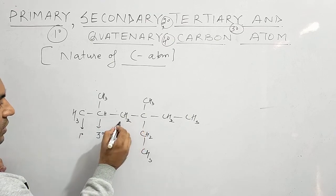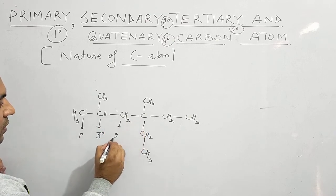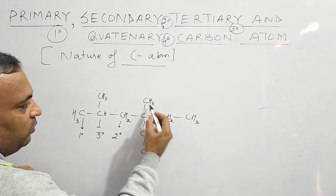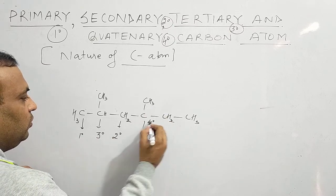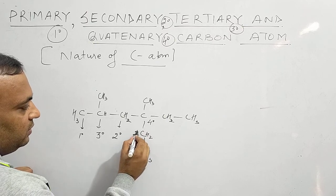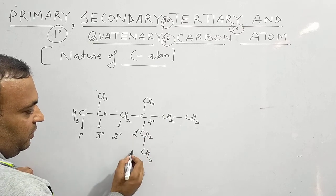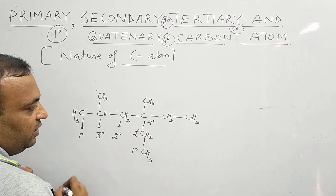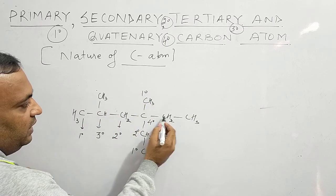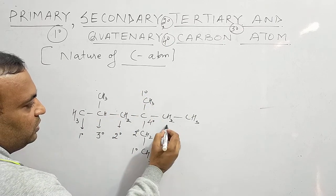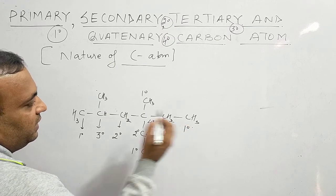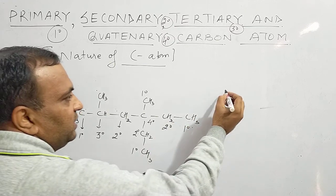This carbon atom is attached to two — it is secondary. This carbon atom is attached to one, two, three, four — it is quaternary. This carbon atom is attached to two — secondary. This carbon atom is attached to one — primary. This carbon atom is attached to one — primary. This carbon atom is attached to two — secondary. This carbon atom is attached to one — primary.